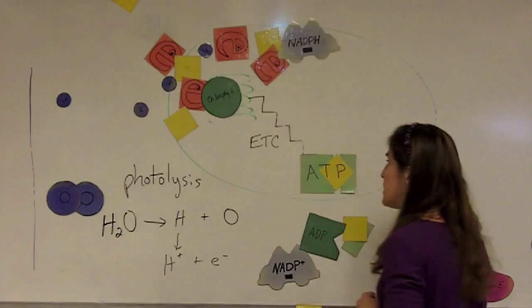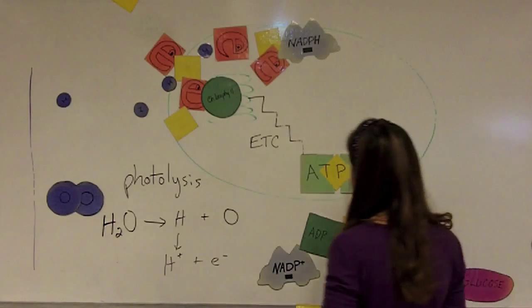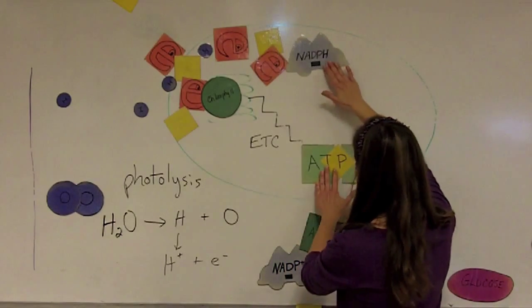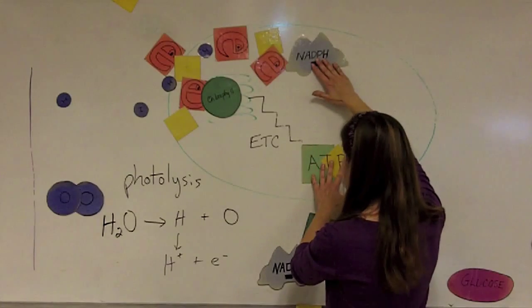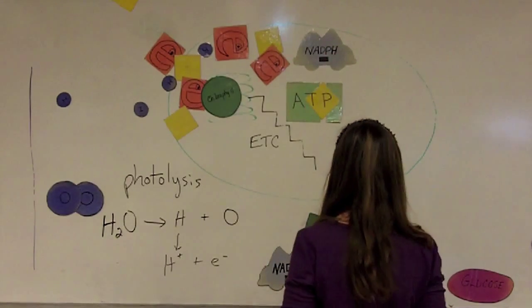The next part is the Calvin cycle. So in the Calvin cycle, we're just going to take our high-energy, our charged carriers. We're going to let them diffuse out into the stroma.